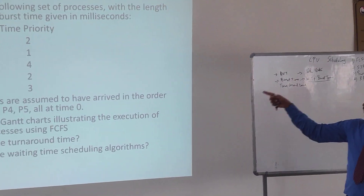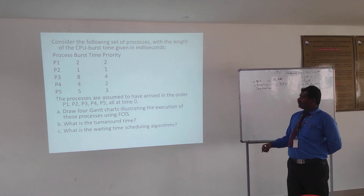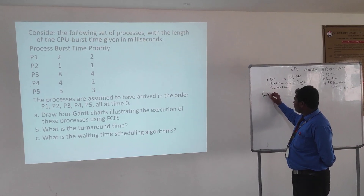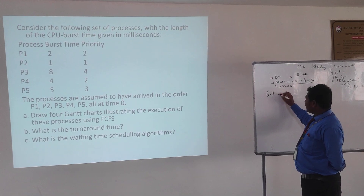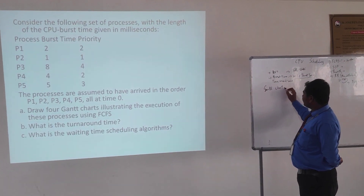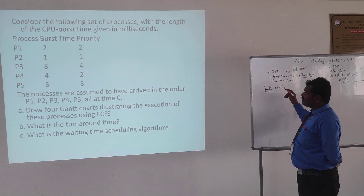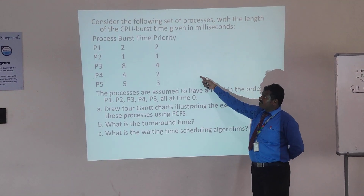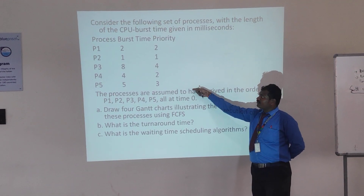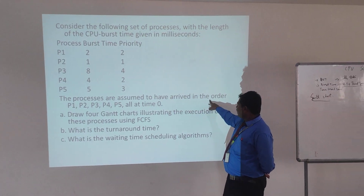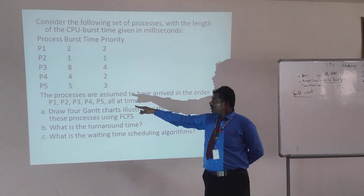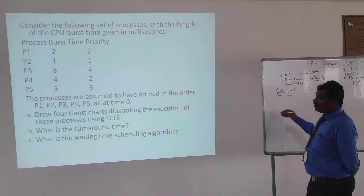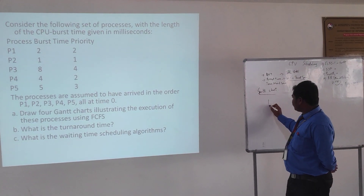Turnaround time is the total time taken to complete a process's work, which includes waiting time as well as burst time. So turnaround time equals waiting time plus burst time. Now we will go into the problem and draw the Gantt chart. In this problem we have 5 processes: P1, P2, P3, P4, and P5. All processes arrive in the order P1, P2, P3, P4, P5, and all start at time 0.